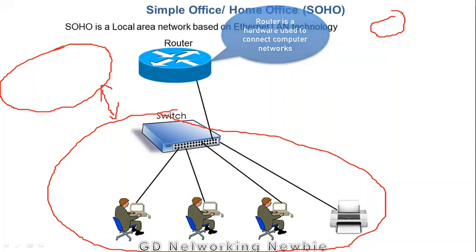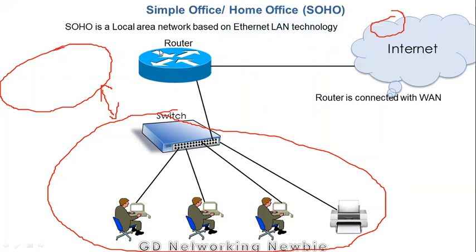The router is connected with other networks making the internet, and that router may also be connected with other wide area networks. So this is the job of a router. This is the simple sketch of a SOHO or simple office, home office network.